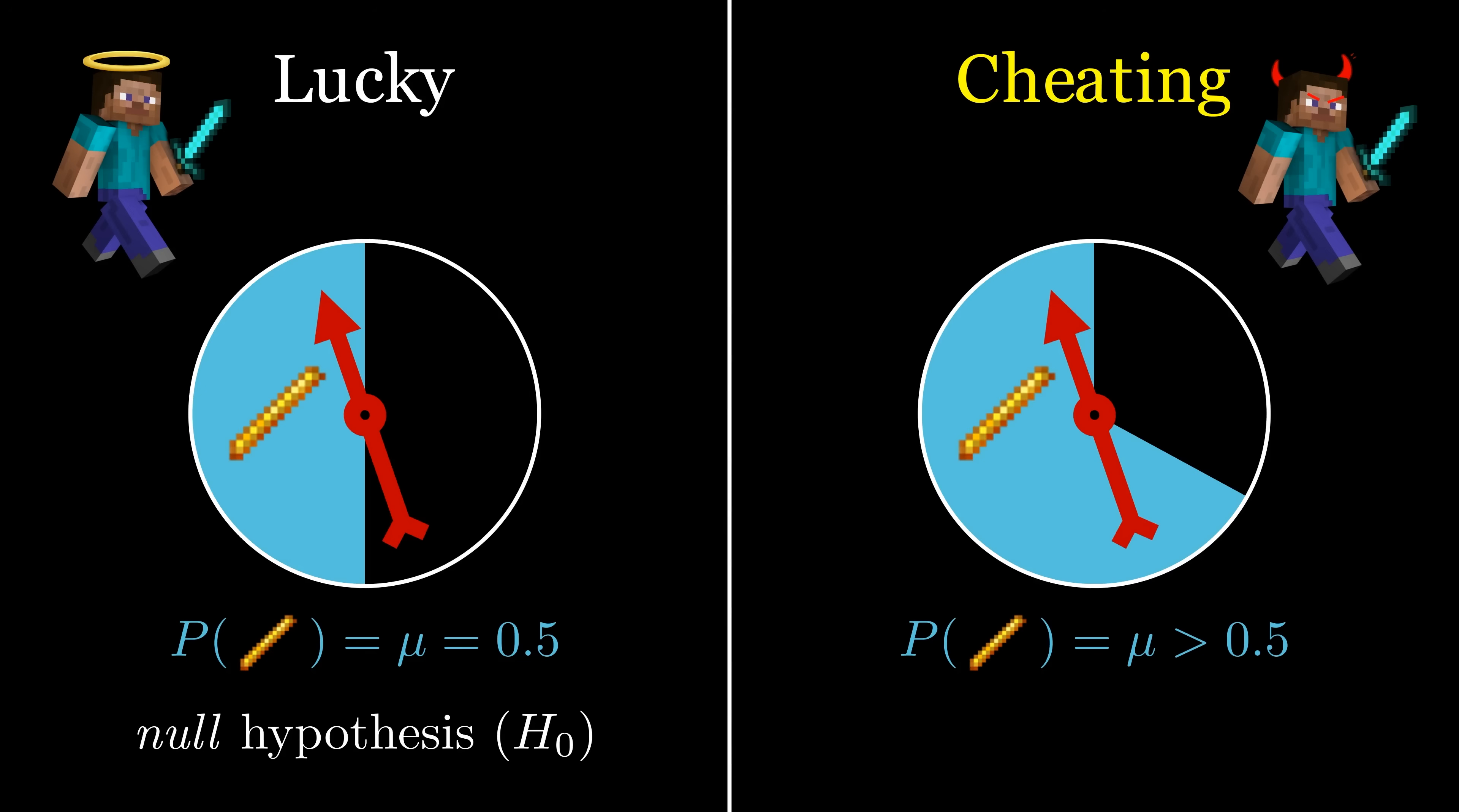We'll call the other hypothesis the alternative hypothesis, and denote it H_1. This nomenclature is used in any hypothesis test, even when our hypotheses take different forms.